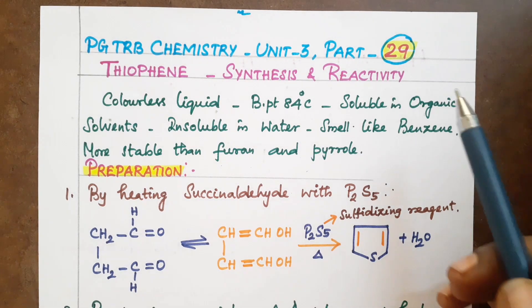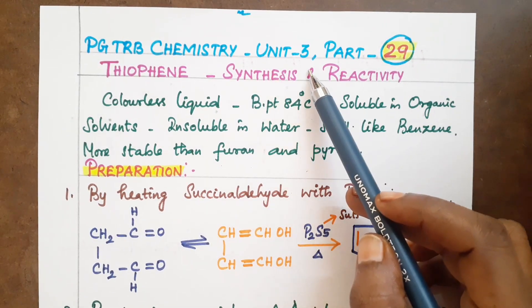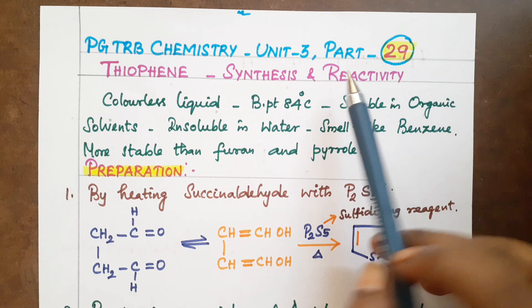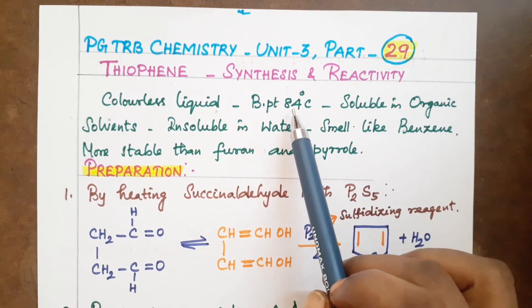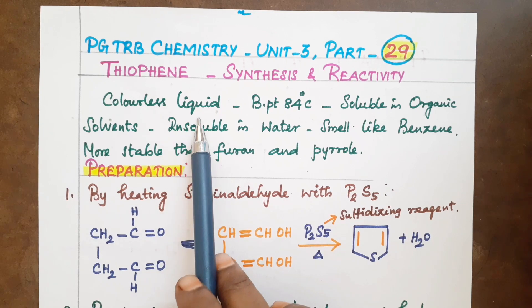Hello, good morning. Welcome to Chemistry School of Learning YouTube channel. The PGTRB portion of Unit 3, Part 29th class background, that is thiophene synthesis and reactivity. In the class, we will discuss first it is a colorless liquid with boiling point 84 degrees Celsius.